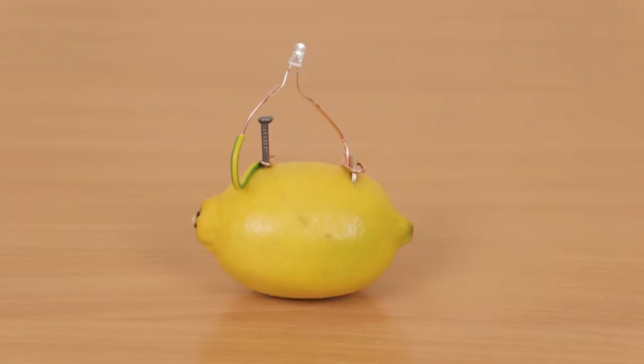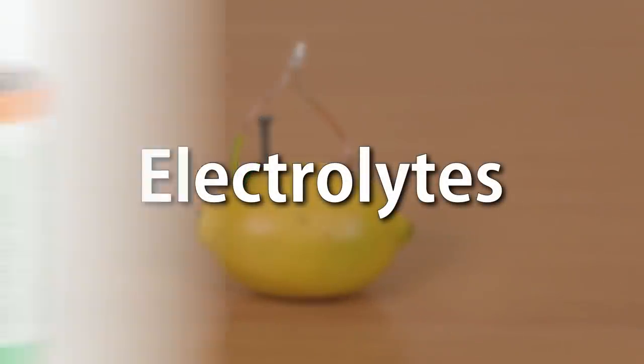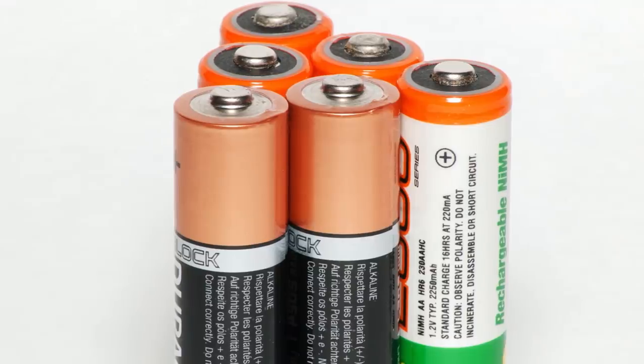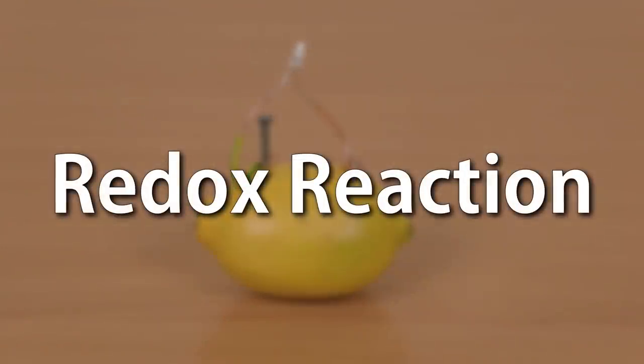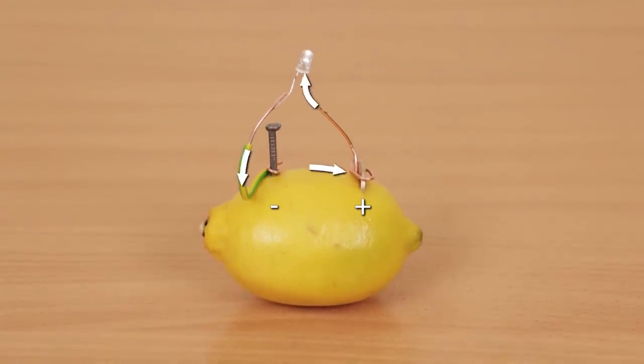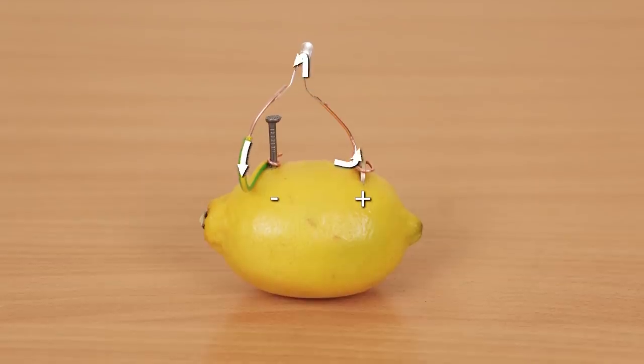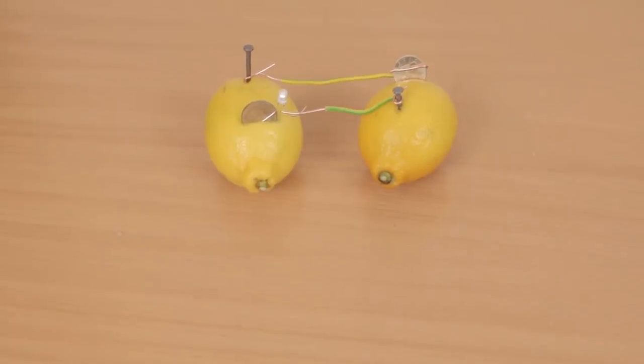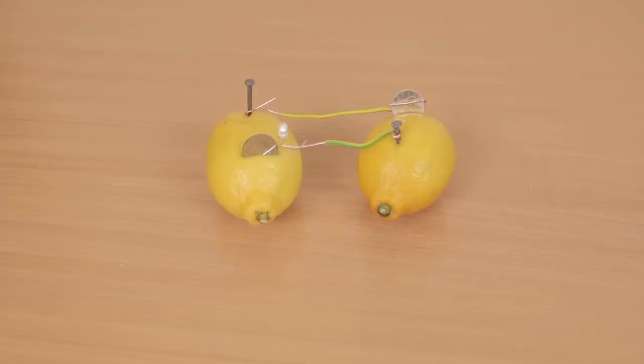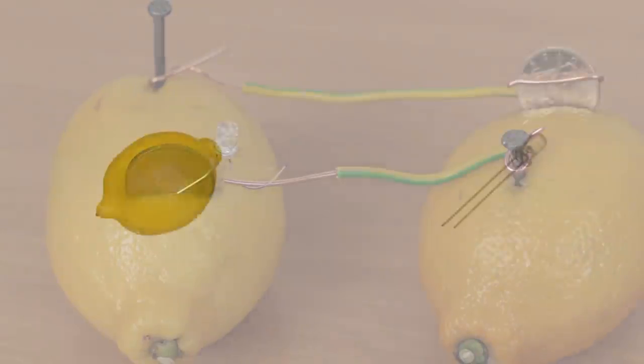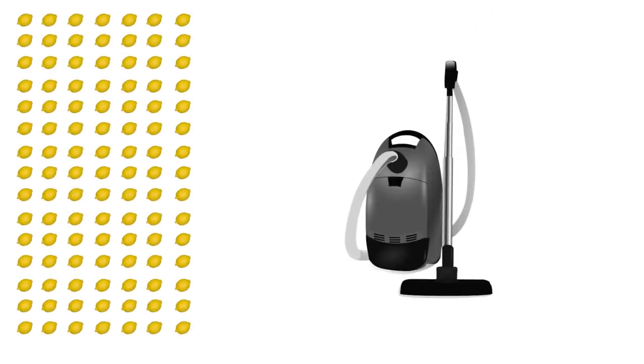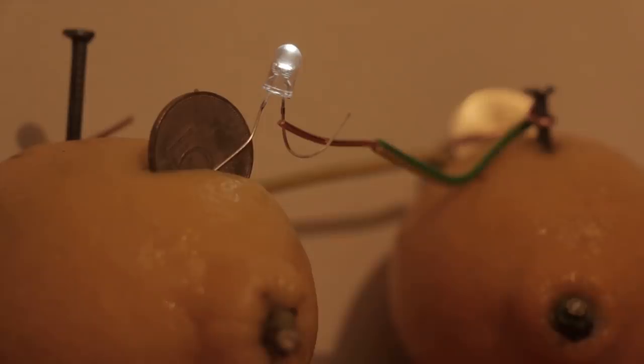This happens because a lemon contains electrolytes, which can carry electricity. It's the same process as that in a normal battery, as you are converting chemical energy into an electrical current. It's called a redox reaction, where one metal gets reduced and gains electrons, and one gets oxidized and loses electrons. This creates a flow of electrons through the lemon, resulting in an electrical charge that can be drawn through a wire. One lemon can light a small bulb as it produces around one volt, but using many more could potentially power an array of electronic items. So, if life gives you lemons, use them as batteries.